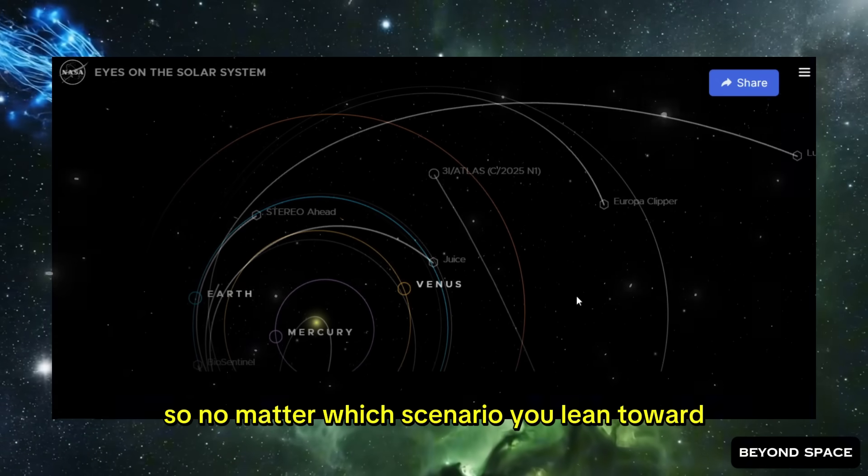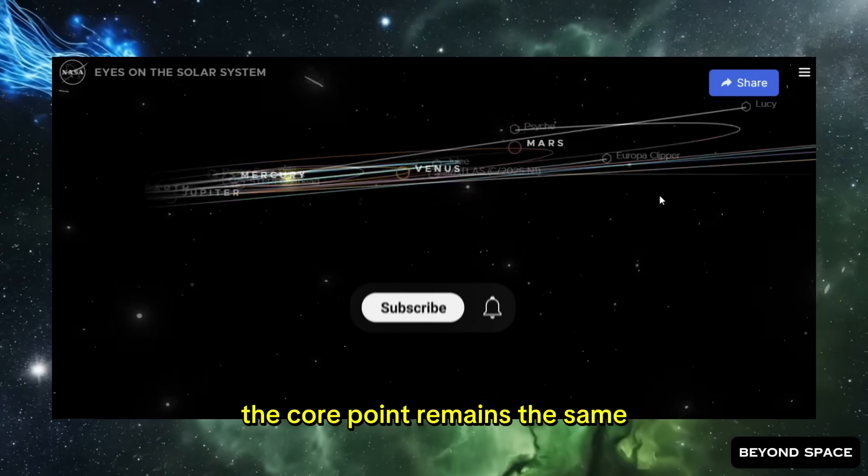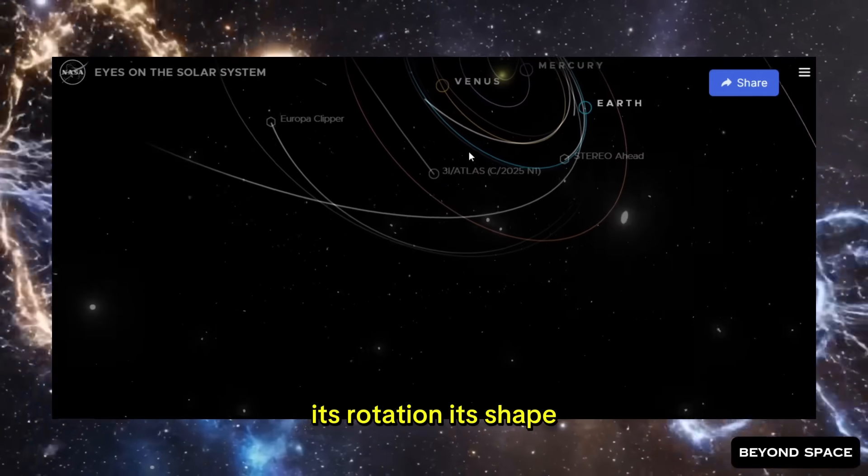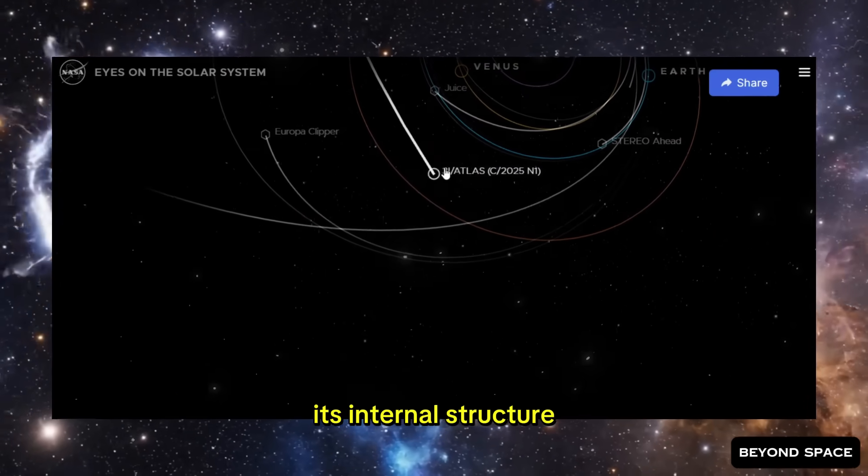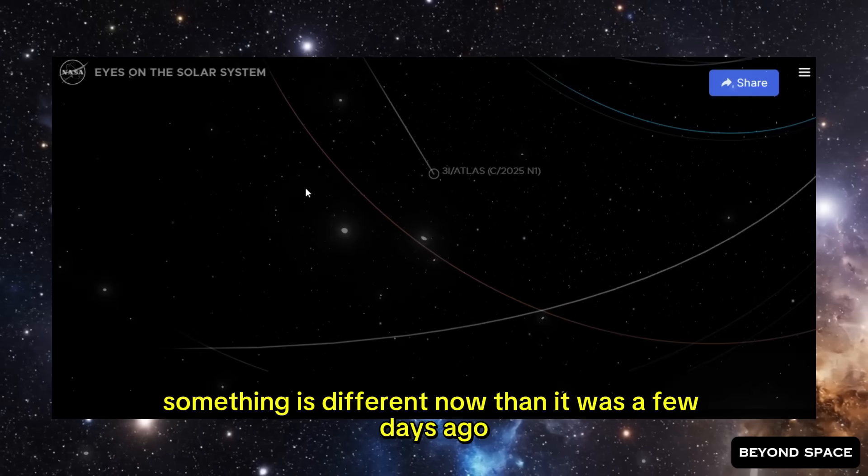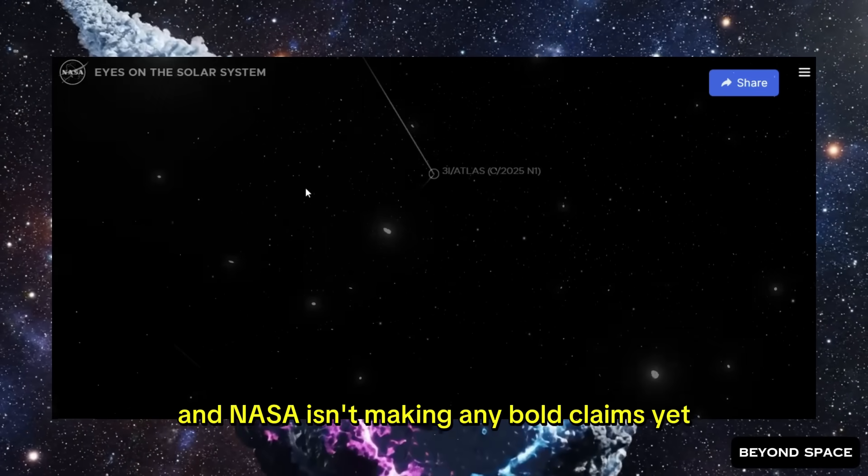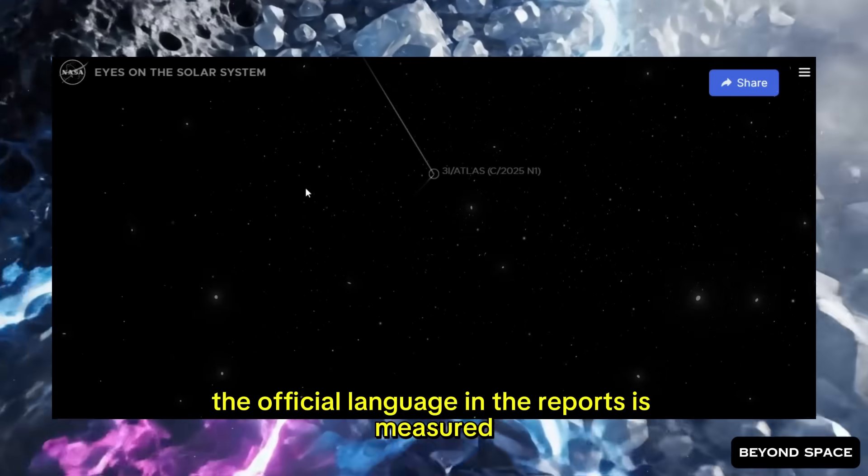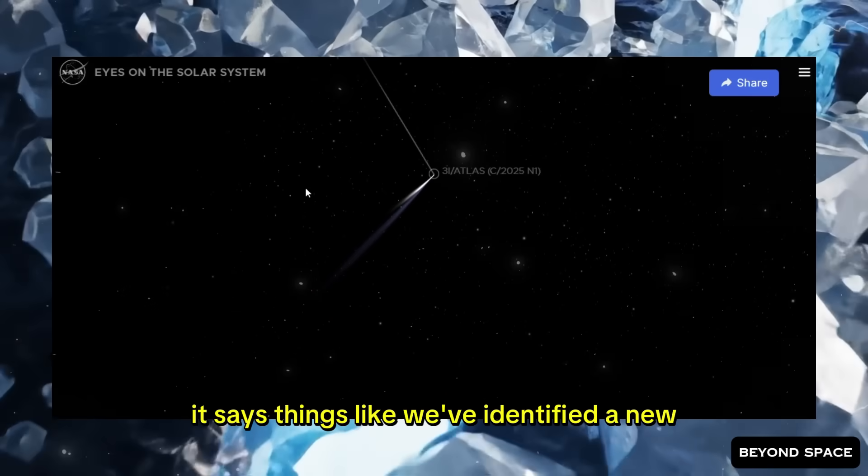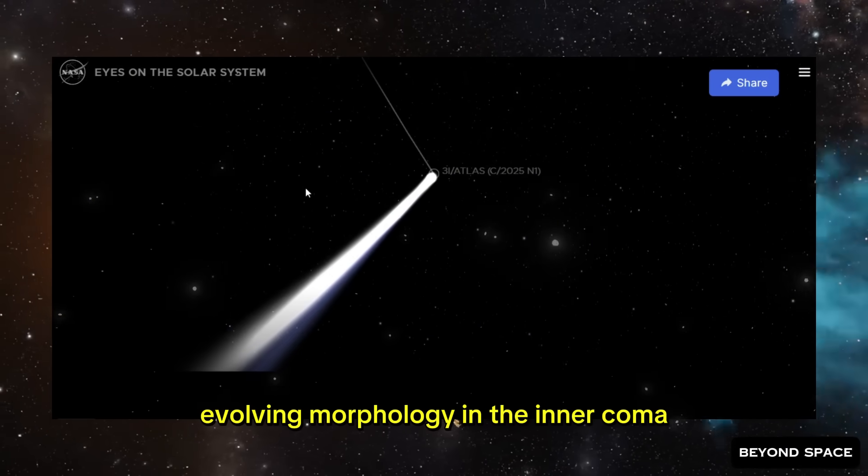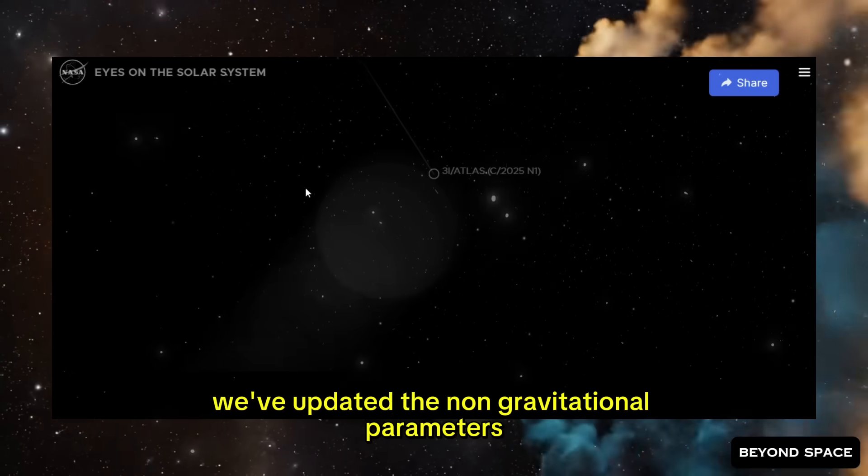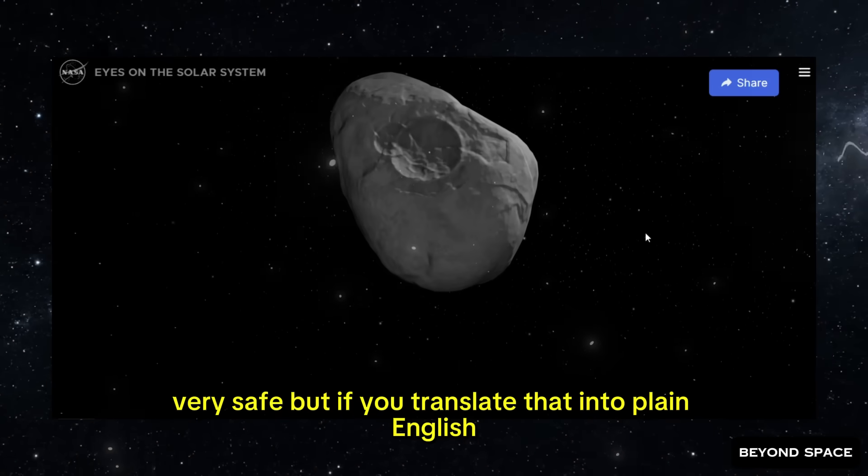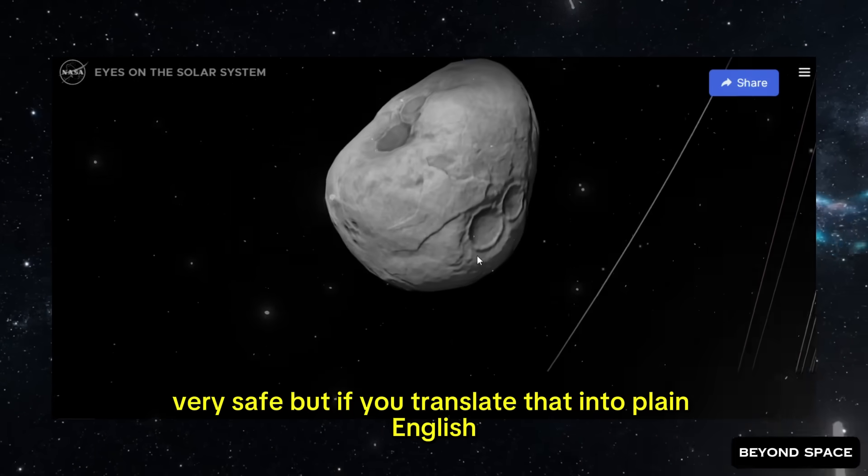No matter which scenario you lean toward, the core point remains the same. Something about this comet has changed. Its rotation, its shape, its internal structure. Something is different now than it was a few days ago. And NASA isn't making any bold claims yet. They're being careful. The official language in the reports is measured. Very technical, very safe. But if you translate that into plain English, what they're really saying is, we discovered something new today, and we don't fully understand it yet.